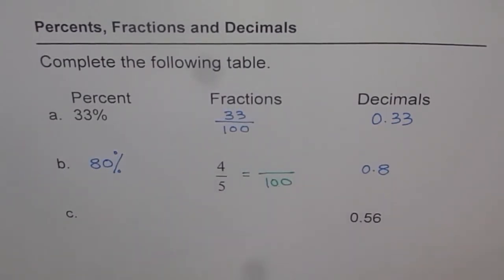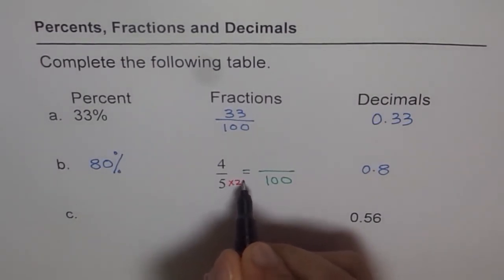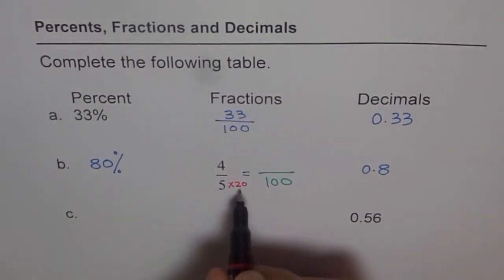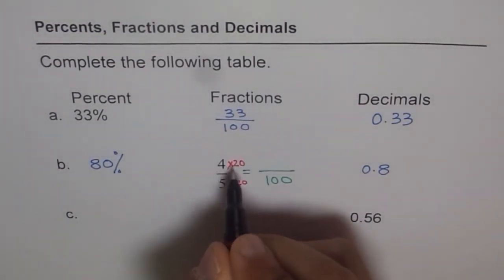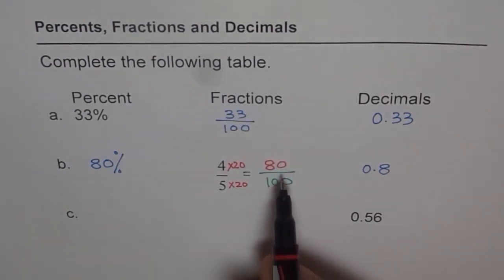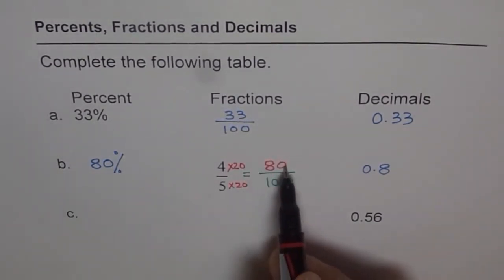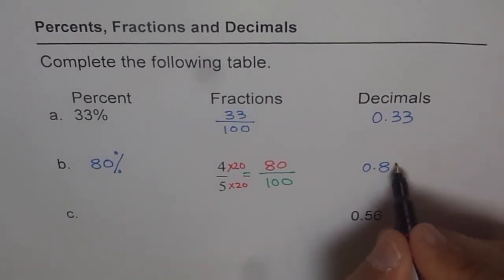How will you get this answer? You can get it by multiplying by 20. If you do 5 times 20 you get 100, so also times 4 by 20, so you get 80. So that is your answer: 80 out of 100 means 80%, and 80 divided by 100 means 0.8.